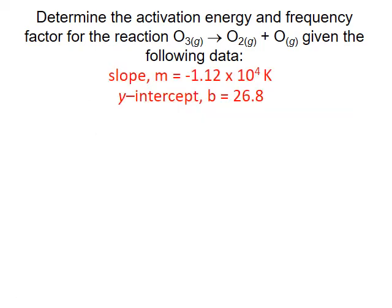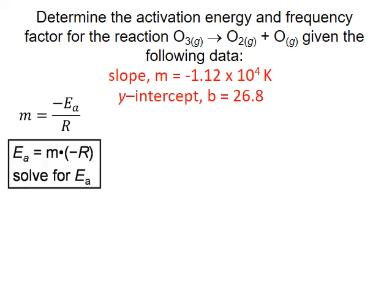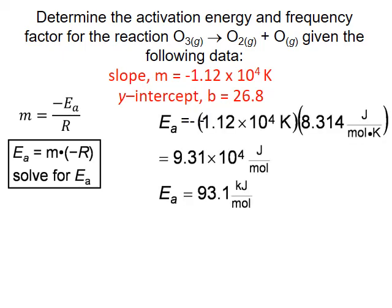We take the slope and y-intercept from this equation and solve for the activation energy and frequency factor. Remember that slope is equal to the negative of the activation energy divided by the gas constant. We can rearrange this and solve for activation energy: the negative of our slope, negative 1.12 times 10 to the 4th Kelvin, times the ideal gas constant, 8.314 joules per mole Kelvin. The Kelvin units cancel, leaving us with joules per mole. Converting 9.31 times 10 to the 4th joules per mole gives an activation energy of 93.1 kilojoules per mole.